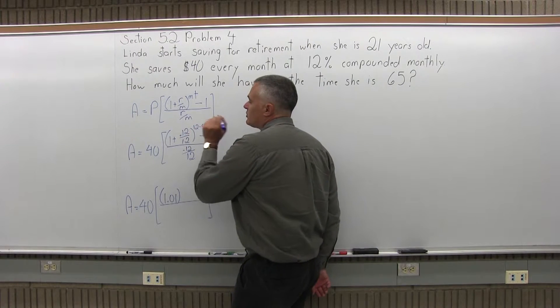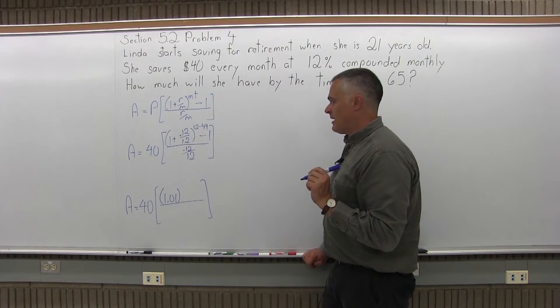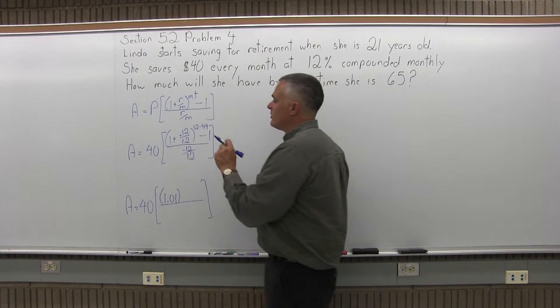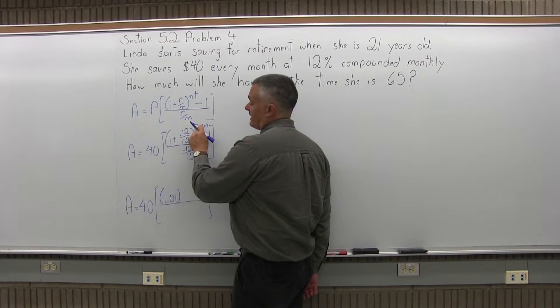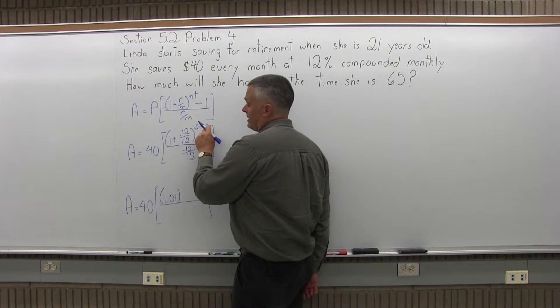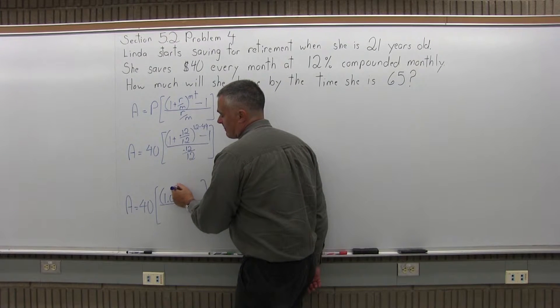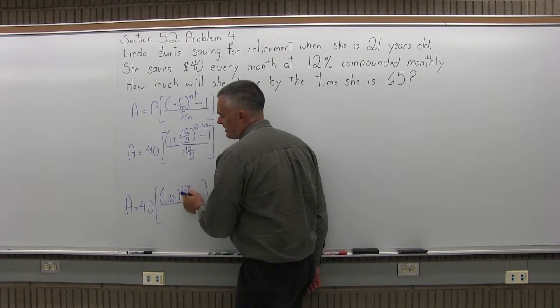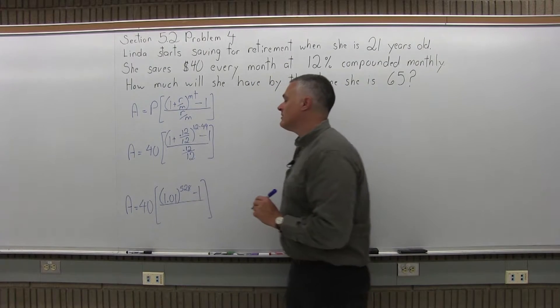Now, my exponent, 12 times 44. Well, 10 times 44 is 440. But I don't have 10, I have two more, so it's another 88. So it should be 528 for my exponent. You can verify that with a calculator. I feel pretty comfortable.